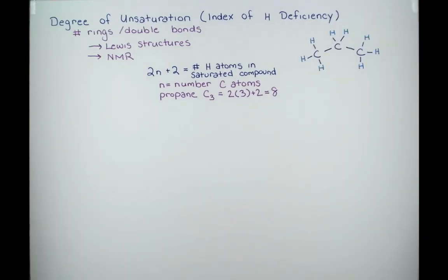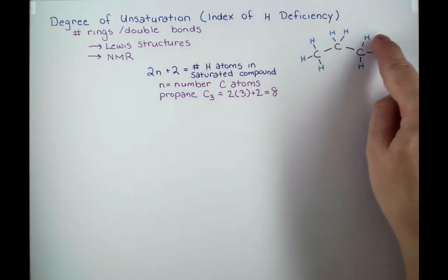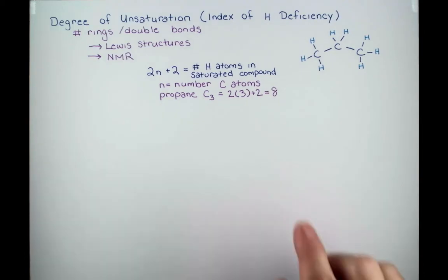So filling in 4 bonds for every carbon atom gives us 1, 2, 3, 4, 5, 6, 7, 8 hydrogen atoms. So that's why our equation works.